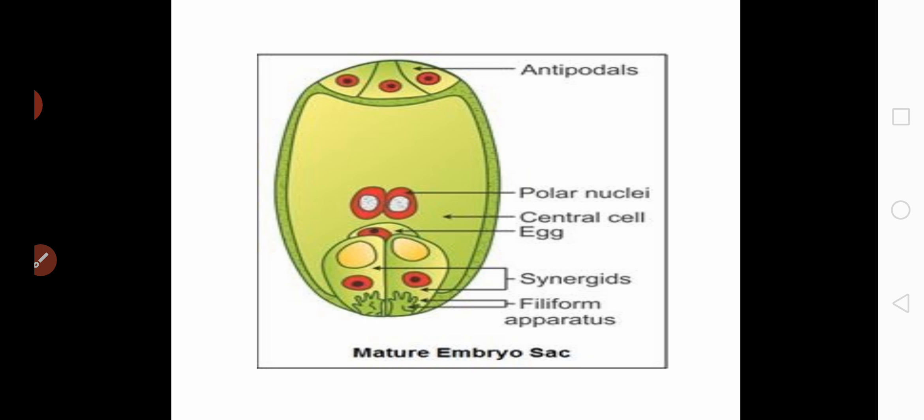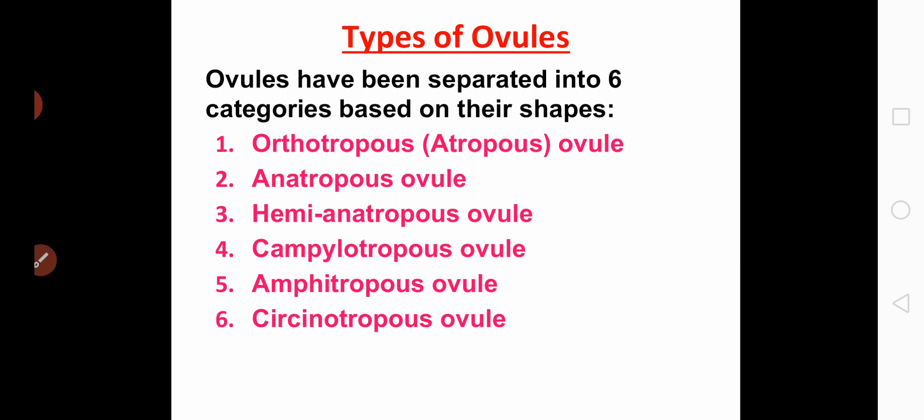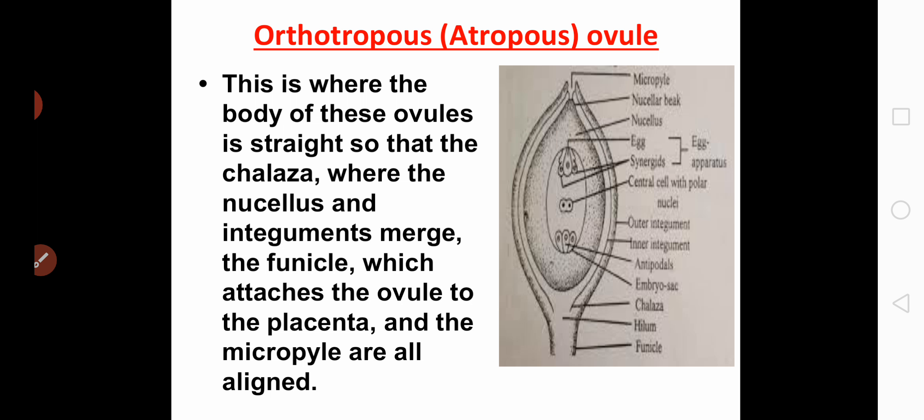This is the structure of the mature embryo sac. Coming to the next topic — types of ovules. Ovules have been separated into six categories based on their shapes: orthotropous, anatropous, hemianatropous, campylotropous, amphitropous, and circinotropous. The orthotropous ovule, also called atropous, is a straight ovule where the chalaza, the funicle, and the micropyle are all aligned in the same direction.